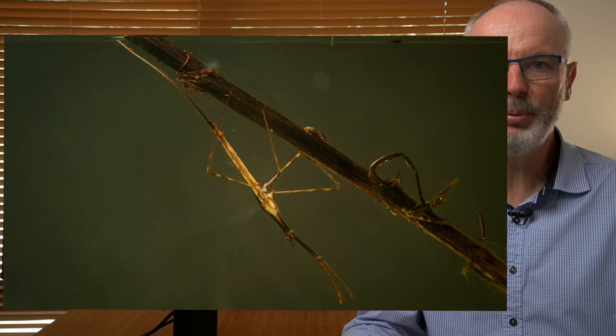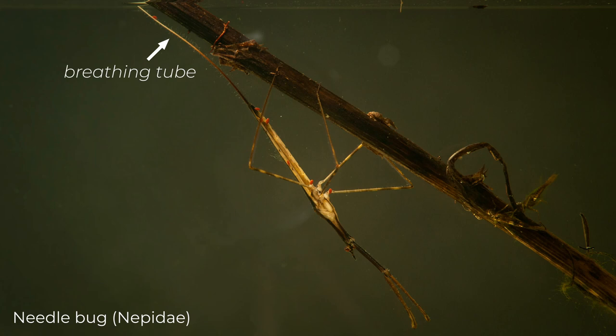Some adult insects like water scorpions and the needle bug here have very long breathing tubes so they can breathe air while underwater. Have a close look at this insect — what else can you see on it? I look forward to your answers.